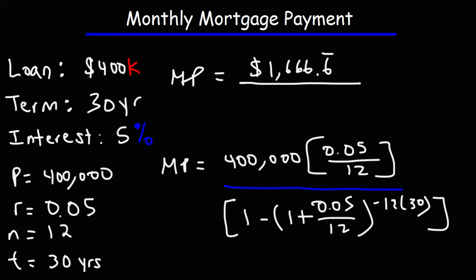Now, I'm going to plug in 1 plus 0.05 divided by 12, and get the decimal value of that part. So that's 1.00416 repeated.